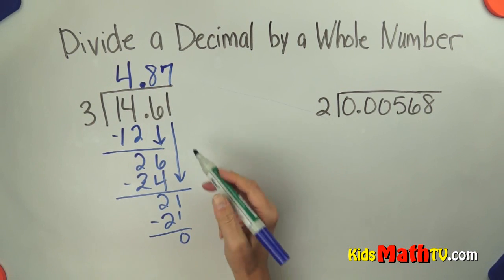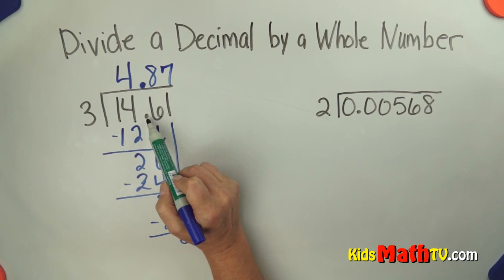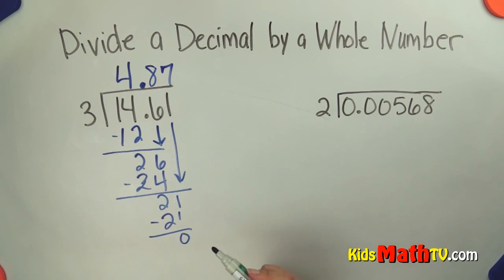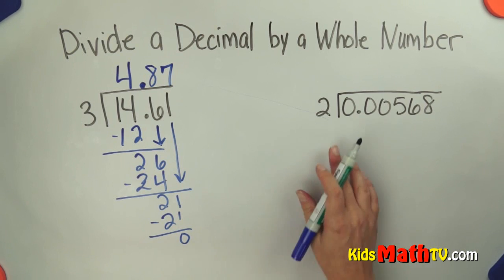So my answer: 14 and 61 hundredths divided by 3 is 4 and 87 hundredths. Let's try one more.